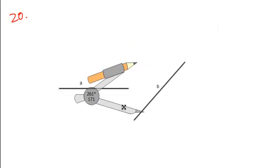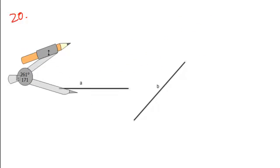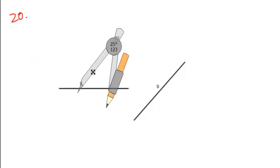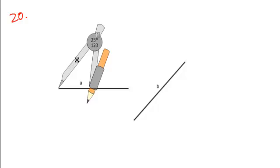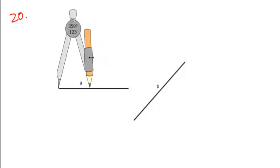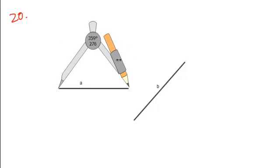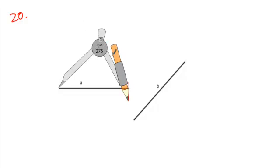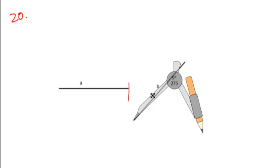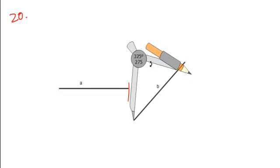In problem 20, we're looking to identify which of these segments is longer. So if we set our compass to the length of one of the segments — here I will set it to measure the length of segment A — and then I superimpose that onto B,